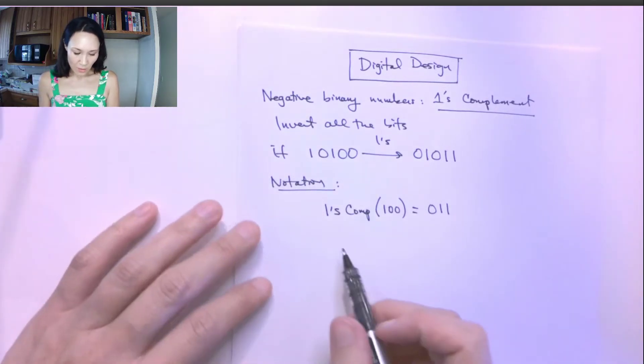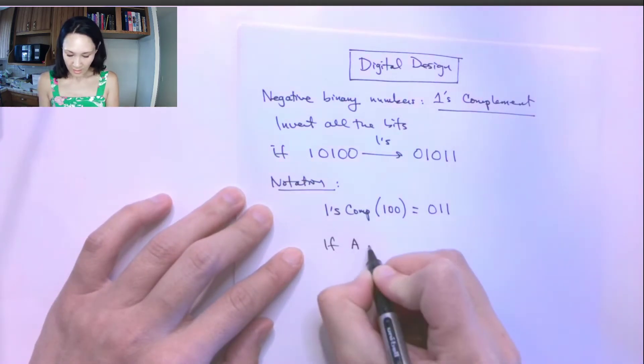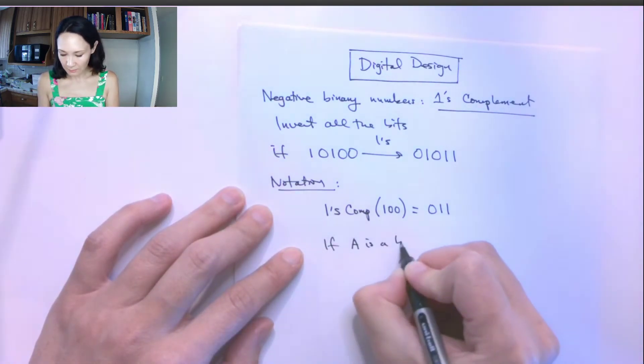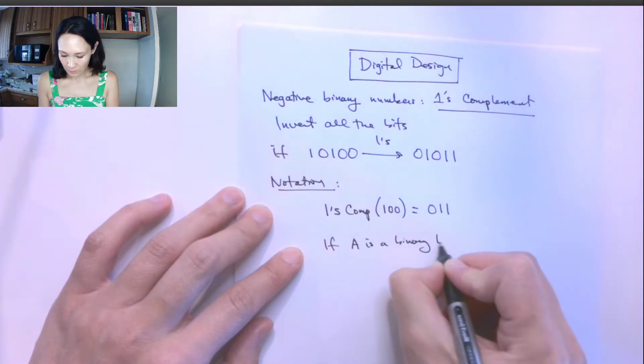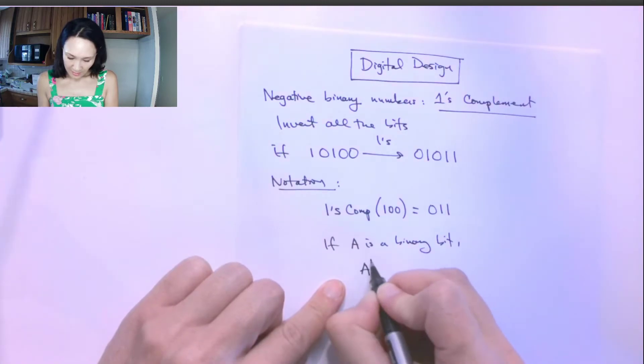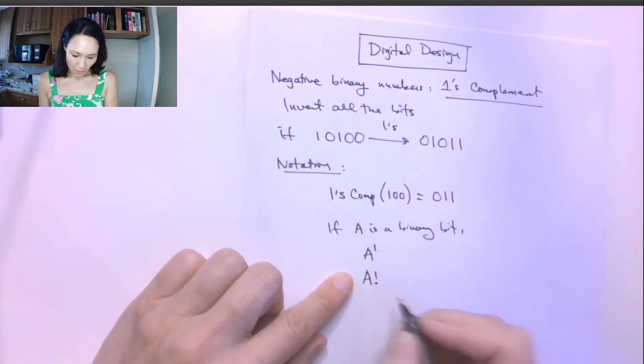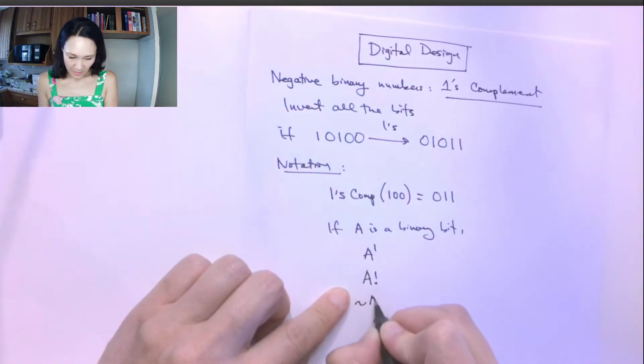Another note about notation is if A is a binary bit, you might see this A tick, or you might see this A with an exclamation point, or you might see a tilde A.